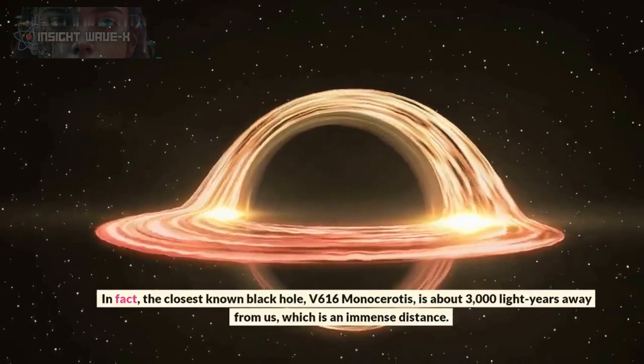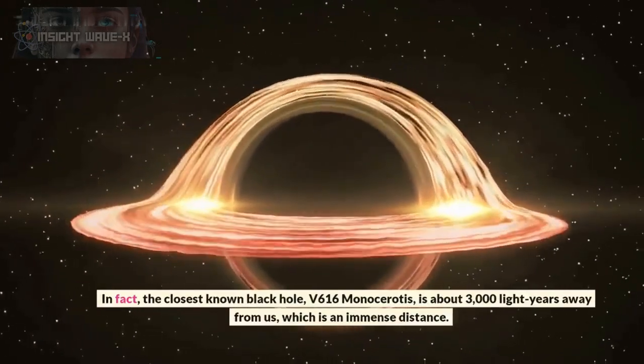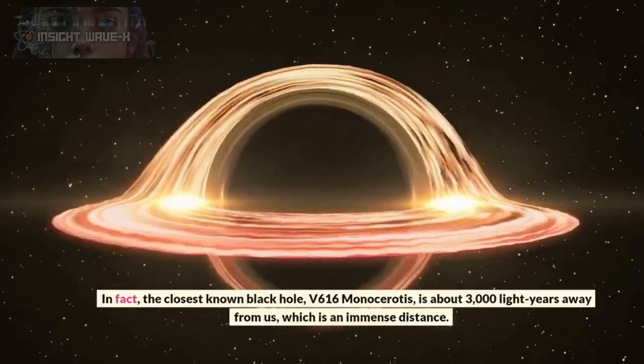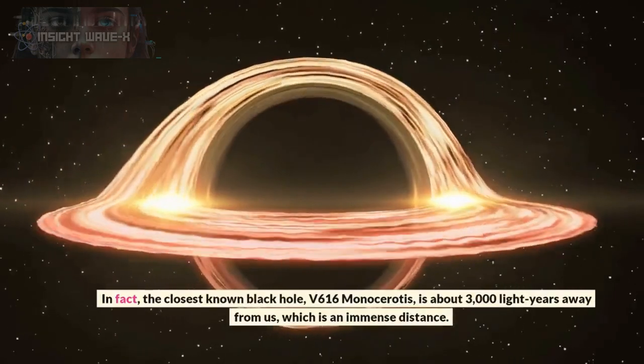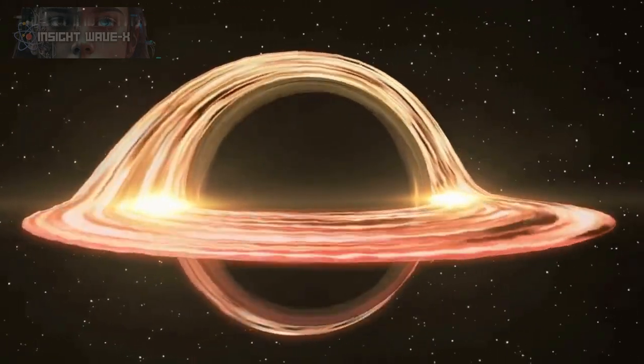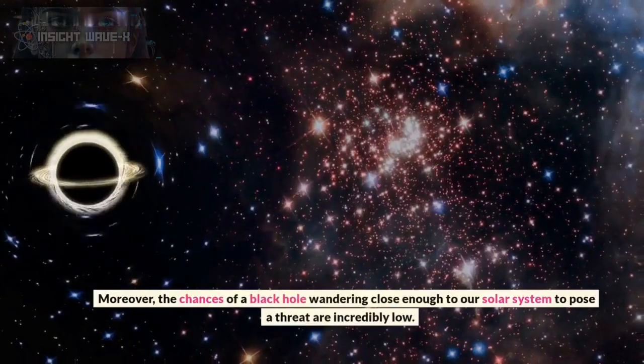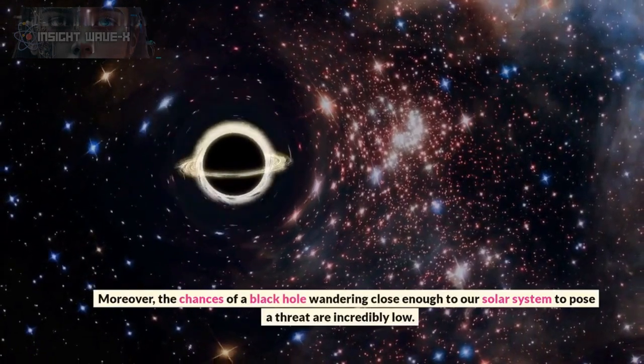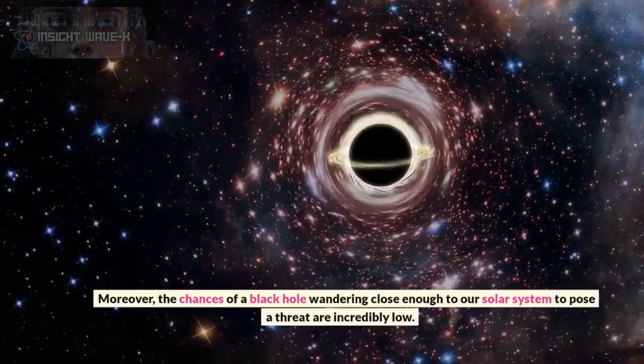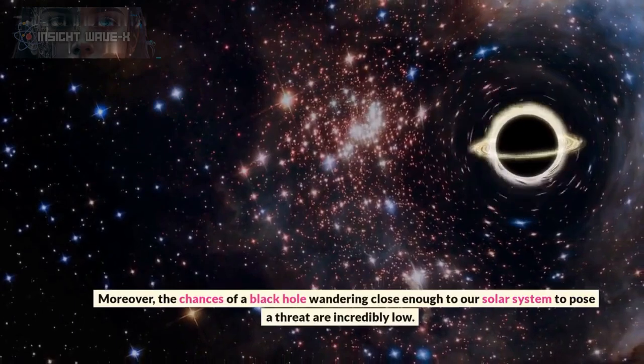In fact, the closest known black hole, V616 Monocerotis, is about 3,000 light years away from us, which is an immense distance. Moreover, the chances of a black hole wandering close enough to our solar system to pose a threat are incredibly low.